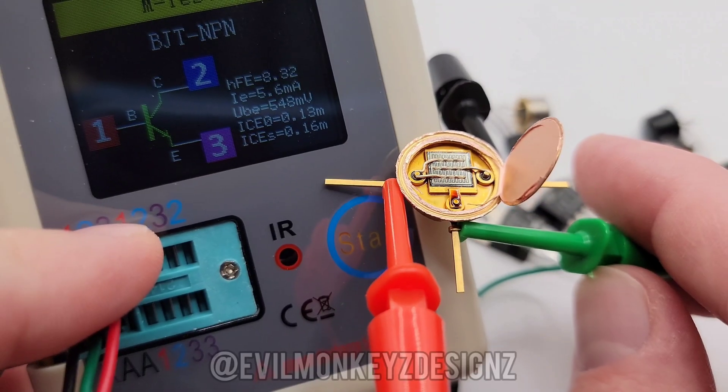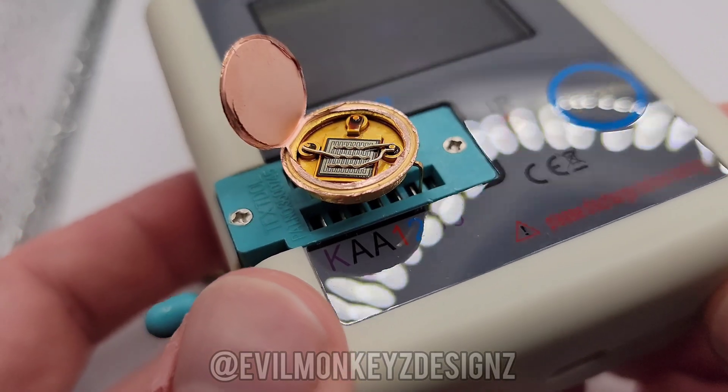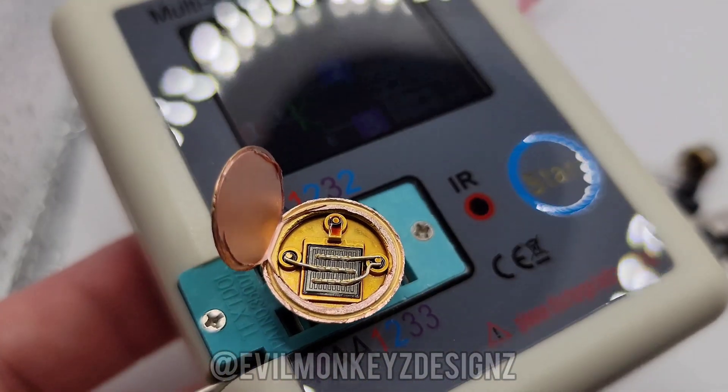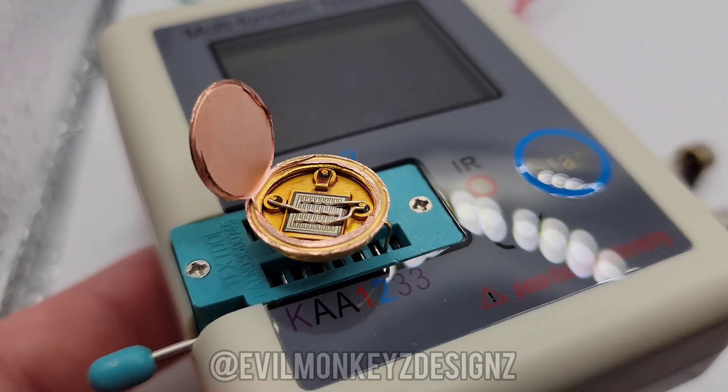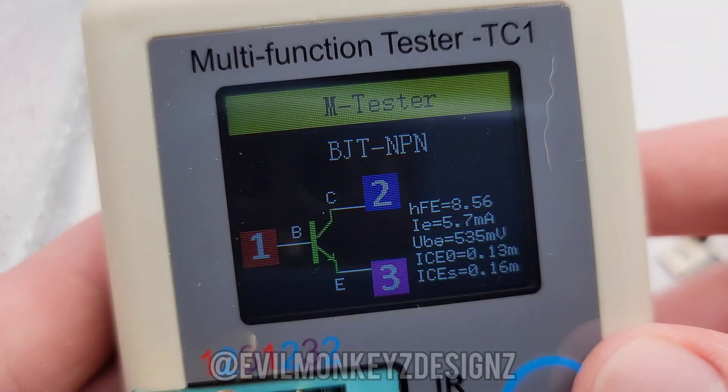Just to make sure that the probe clips weren't interfering, I ran one more test with the device plugged directly into the tester. I was able to bend the legs in such a way that it fit right in. After running the test again, I'm able to confirm that the values are essentially the same as the first run.